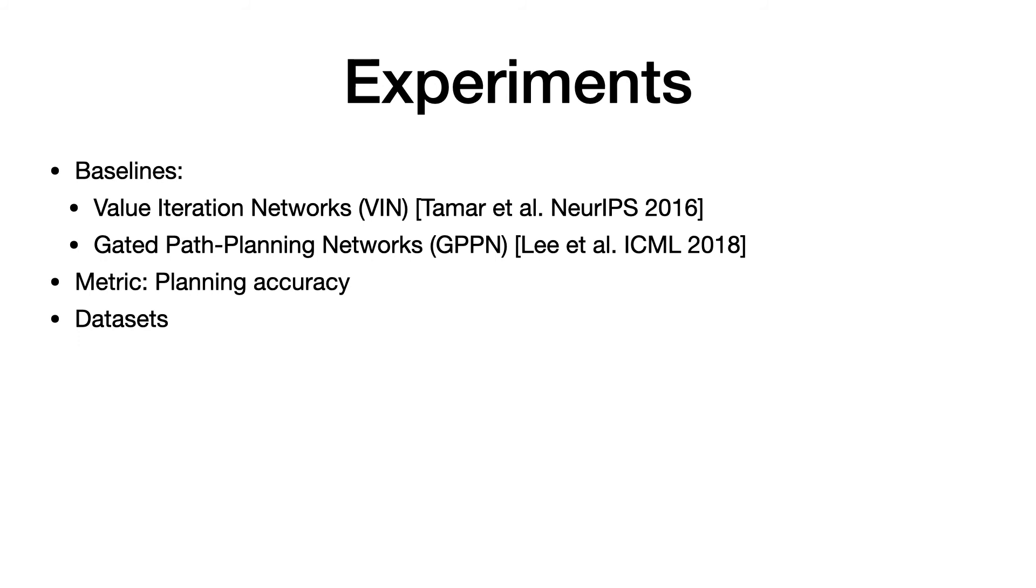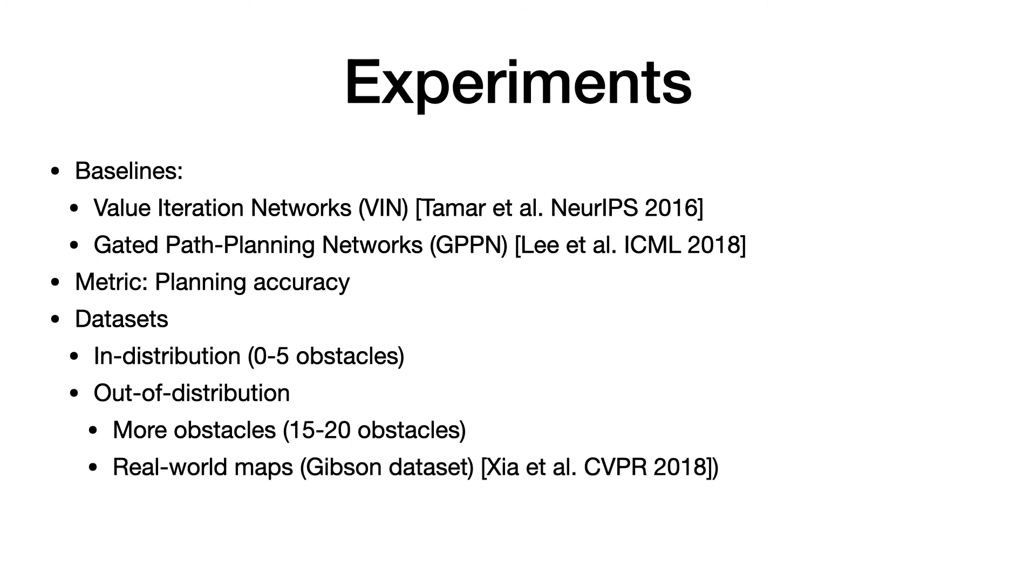First is in-distribution with same distribution of obstacles as training, and the second is out-of-distribution where we increase the obstacles at test time and evaluate on real-world maps in the Gibson dataset.